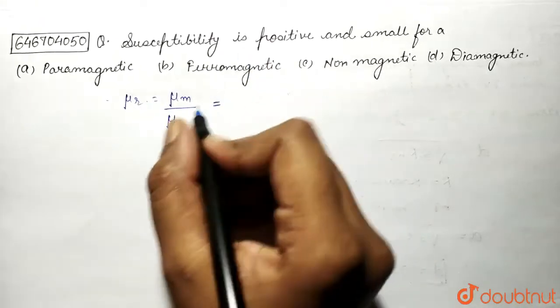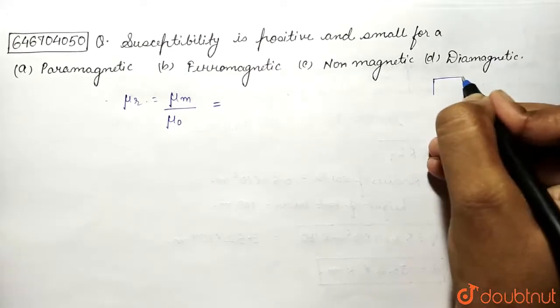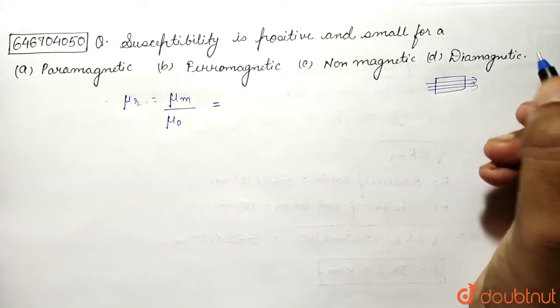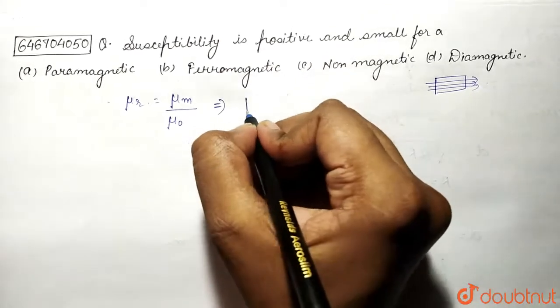is how much a substance allows the magnetic field lines to pass through it. Okay, now for a paramagnetic substance